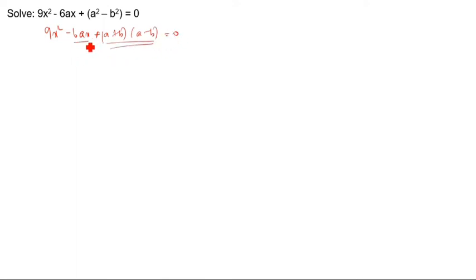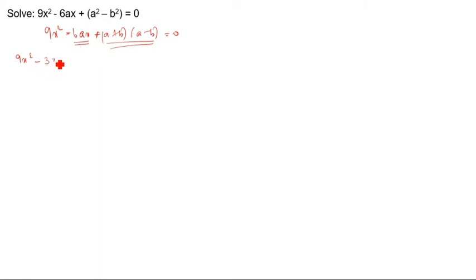We need to split the middle term. So we have 9x² minus... this is minus, so you have to put minus 3. Split into 3. Take 3x times (a+b). You have to write it here. (a minus b) is there.